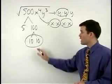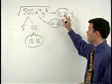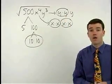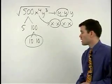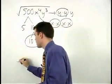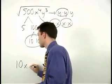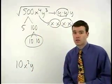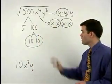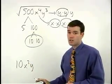So a 10, an x, another x, and a y can all come out of the radical. We have 10x squared y on the outside. Notice that everything that comes out multiplies together.